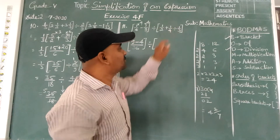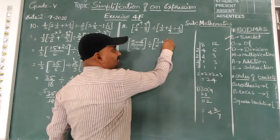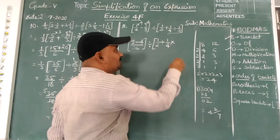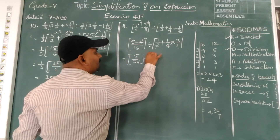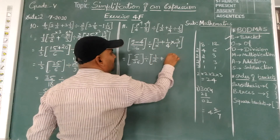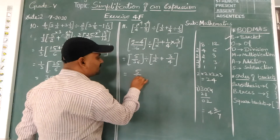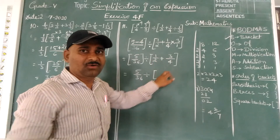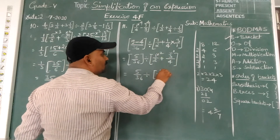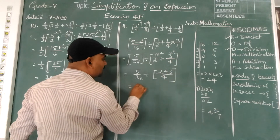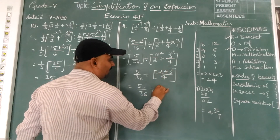In the division, keep 1/2 as it is, change the sign, and the reciprocal of 1/3 is 3/1. So 9 minus 4 is 5, divided by 36. Then 1/2 plus 3 ones is 3. Take LCM of 2 and 4, which is 4: 2 twos are 4, 4 ones are 4. So 2 plus 3 gives 5/4. Result: 5/36 divided by 5/4.